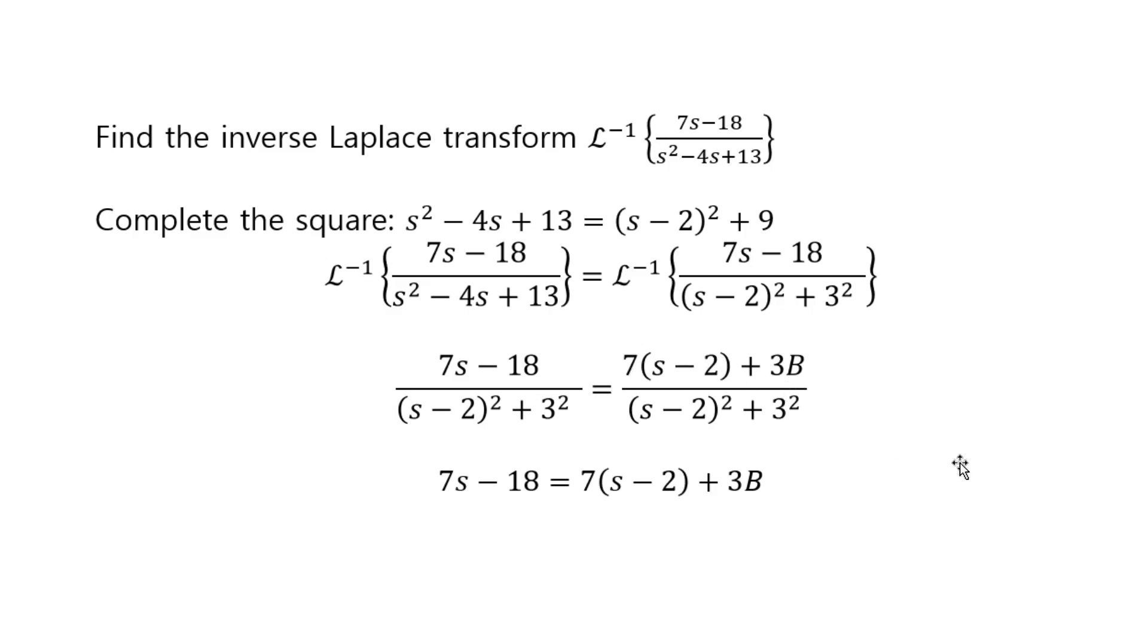And then what you do is the top, because the bottoms agree, the top should agree too, right? So the top should agree. And then if you just plug in 2 into s, then this just becomes 0, and 14 minus 18, that's negative 4. So you get negative 4 equals to 3b, where if you divide by 3, you get b equals to negative 4 thirds.